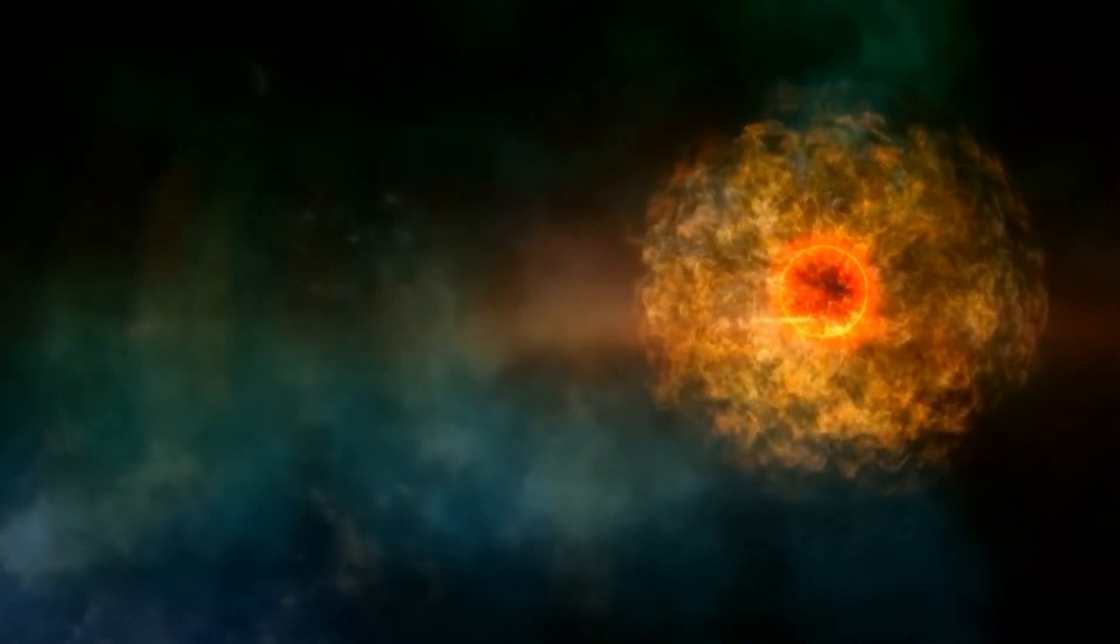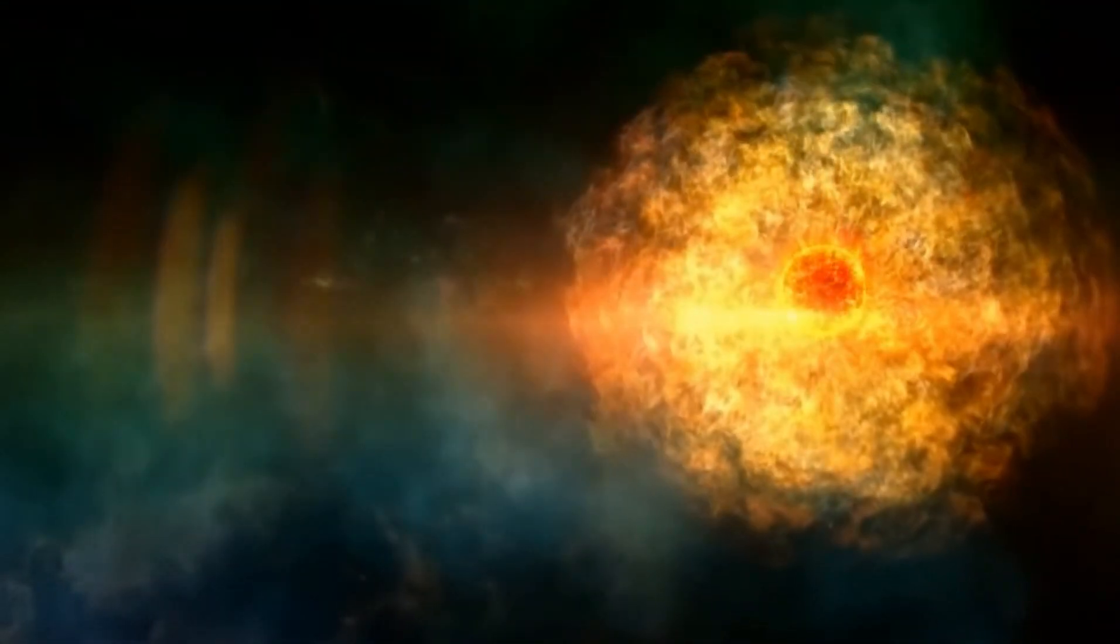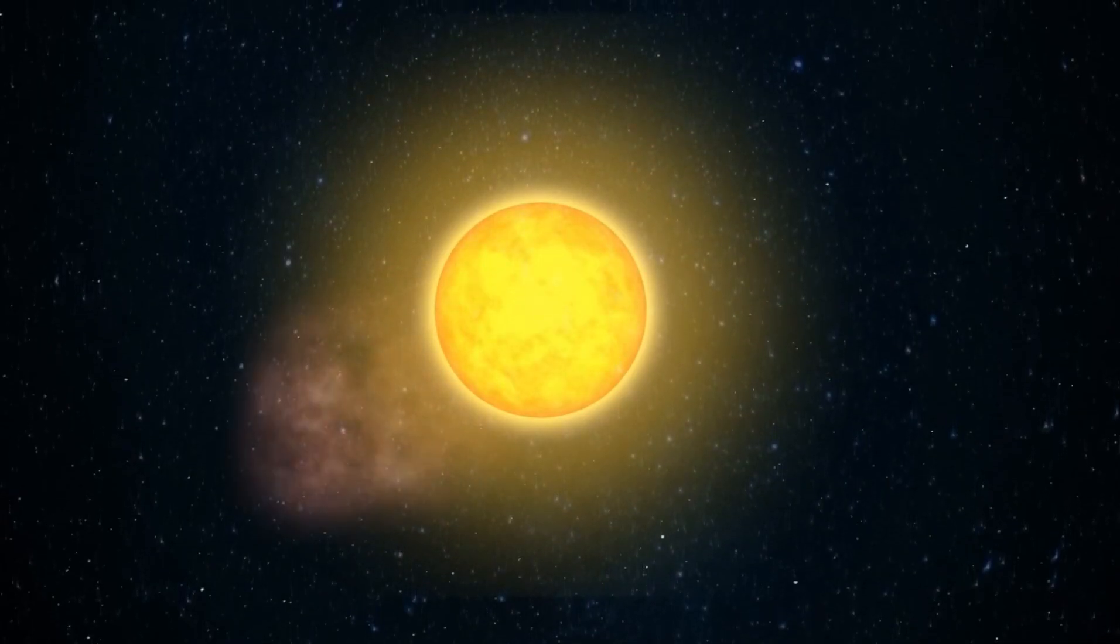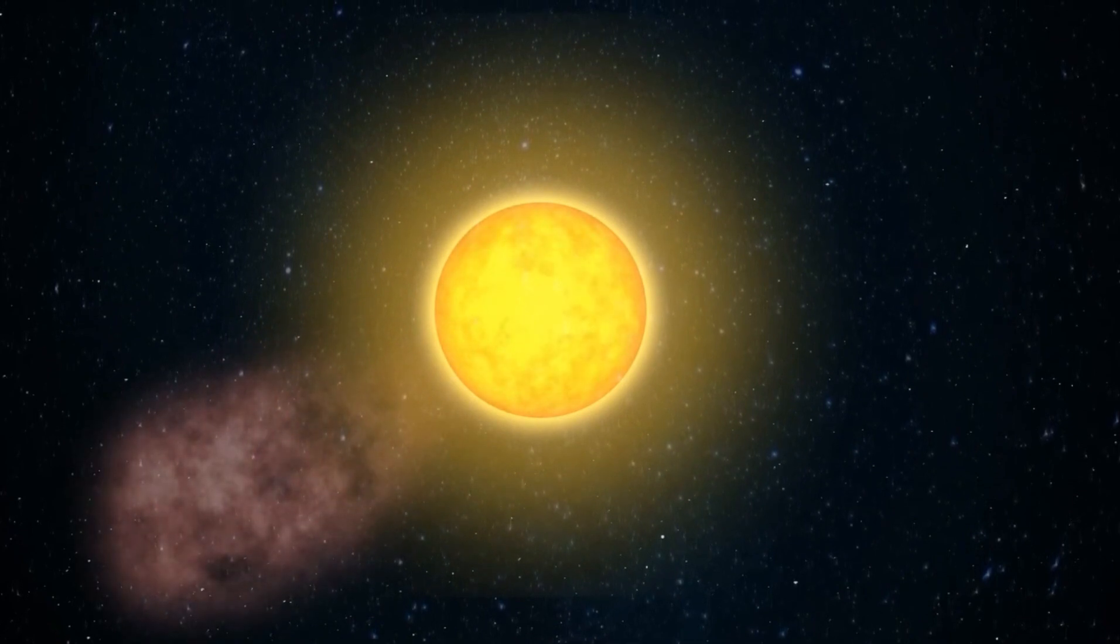But what we have observed in 2019 was something strange, since Betelgeuse ejected more than 400 billion times more mass than is typically seen in a surface mass ejection. This may have resulted in a hot gas enveloping surrounding stars, which may have caused the dimming of its light in the first place.